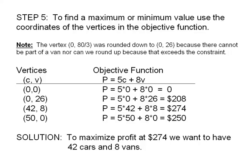Eighty thirds is not a legitimate value for the number of vans. Therefore, we round that down to the number 26 because we cannot have part of a van, nor can we round up because that would exceed our constraint.